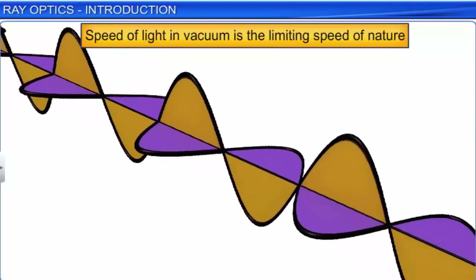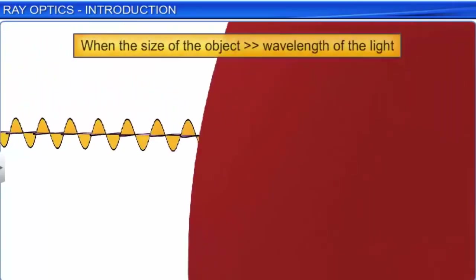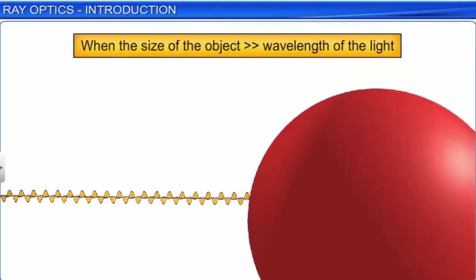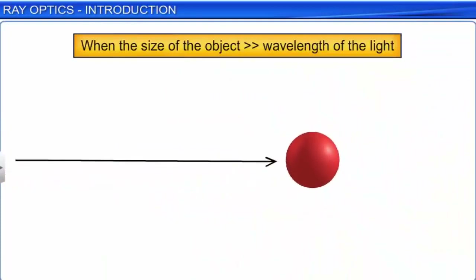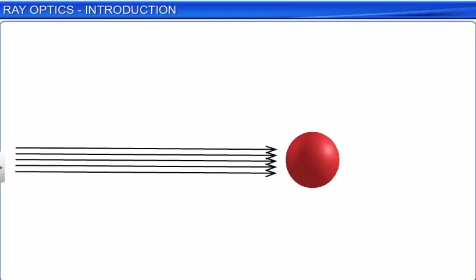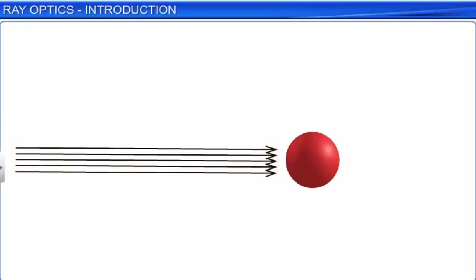When the size of an object with which light interacts is very large compared to its wavelength, we can treat light as traveling in a straight line. This straight path of light is called a ray of light. A bundle of such rays together is called a beam of light. The study of different optical phenomena by treating light as rays is known as ray optics, in which the propagation of light through optical media is studied by tracing these light rays.